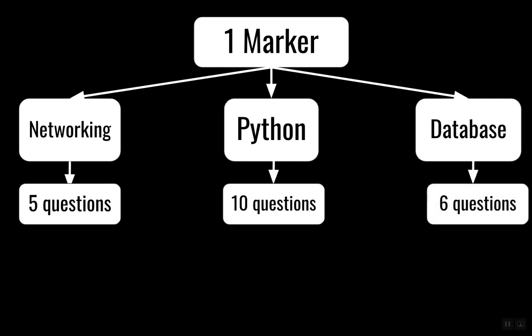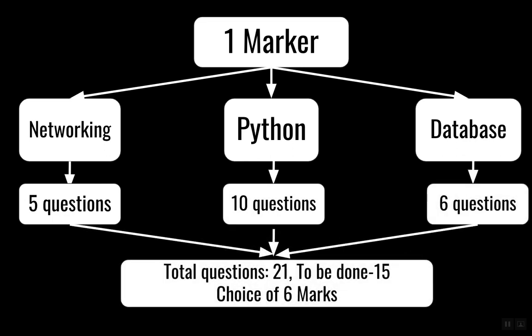If you talk about the one-marker questions, there are five questions from networking, ten questions from Python, and six questions from database — a total of 21 questions. The good part is you have a choice of skipping six questions because you only have to do 15. So if you're not very thorough with networking, database, or Python, that flexibility is given as per the sample question paper.